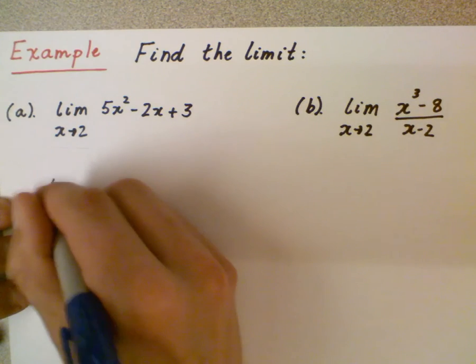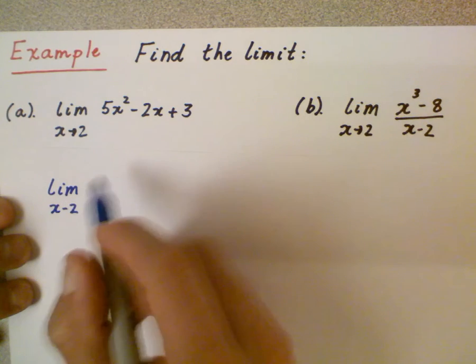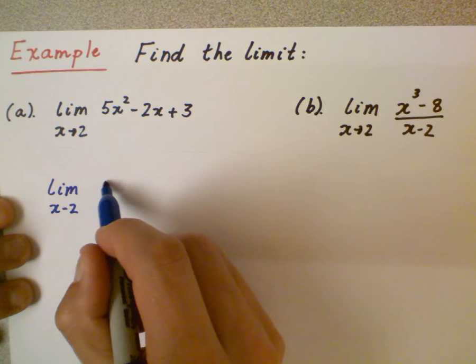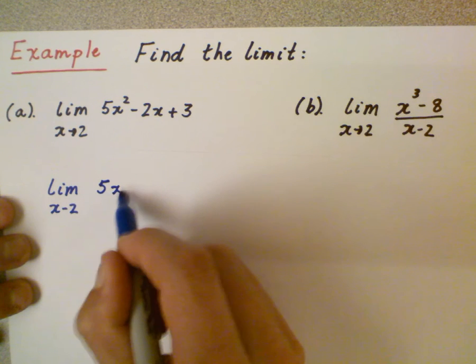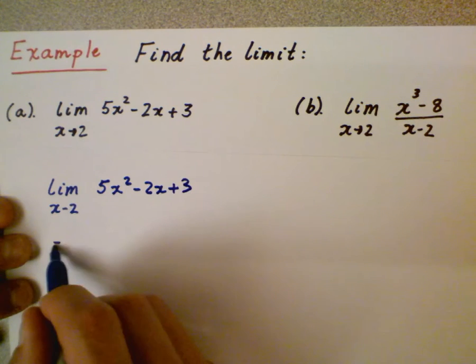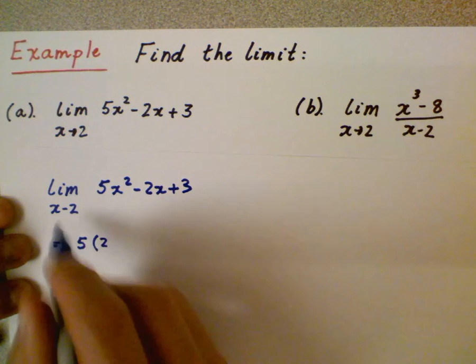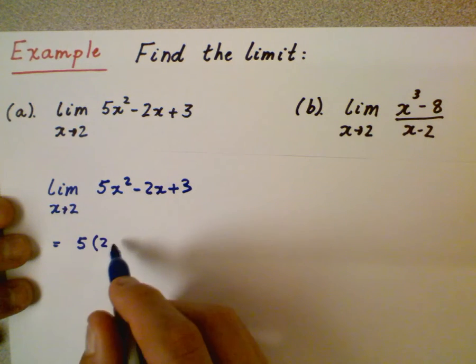So if I wanted to rewrite that, the limit as x is approaching 2. I can say 5x². I'm just going to rewrite my problem here. Now I'm just going to try direct substitution. So I'm going to say the limit is going to be 5 times 2. It's approaching 2, not negative 2.